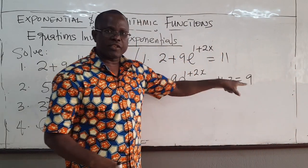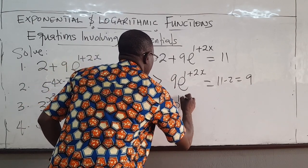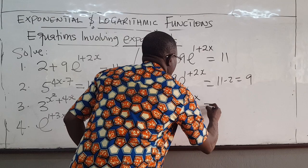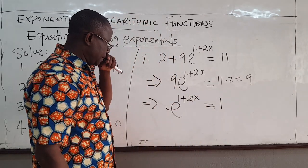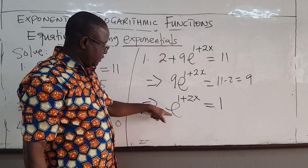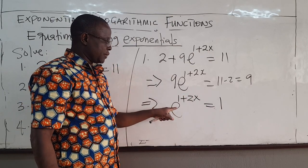Okay, easier. So 9e^(1+2x) = 9, divide both sides by 9, and you have e^(1+2x) = 1. So this is e raised to some power equal to 1, it's not 0.